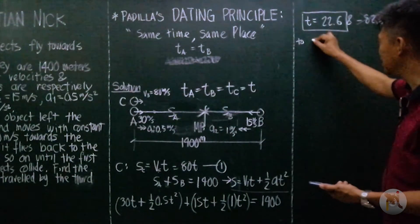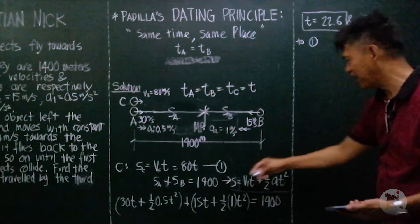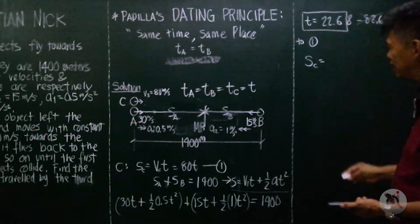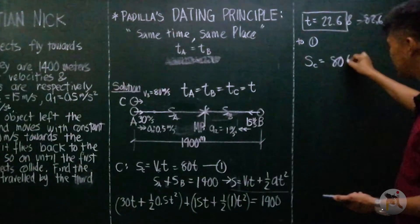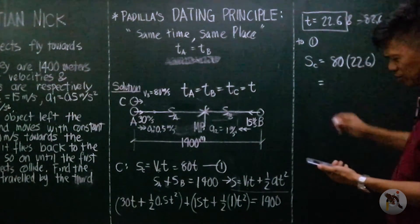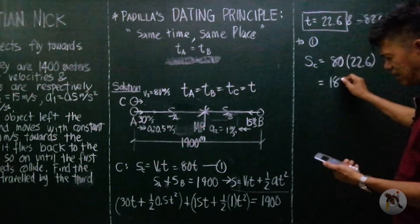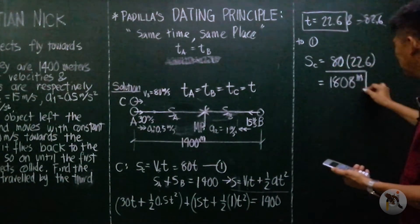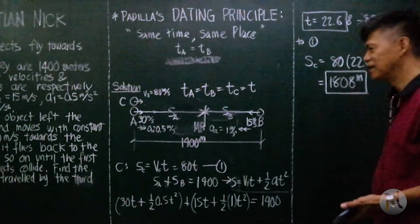So substituting this to equation 1 will have the total distance traveled by object C is 80 times time 22.6, and this is going to be 1808 meters, the total distance traveled by object C.